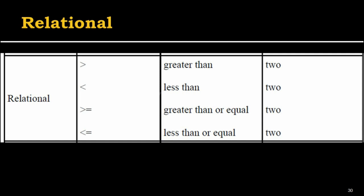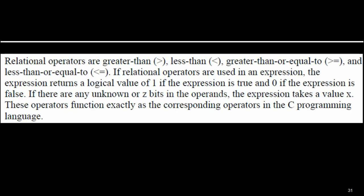Next are the relational operators. There are four types: greater than (>), less than (<), greater than or equal to (>=), and less than or equal to (<=). All relational operators take two operands. If the expression is true, the operator returns logical 1; otherwise it returns logical 0. These operators function exactly like the corresponding operators in C programming language.